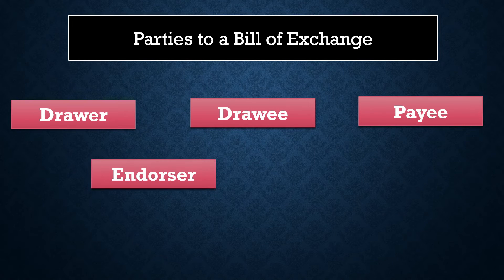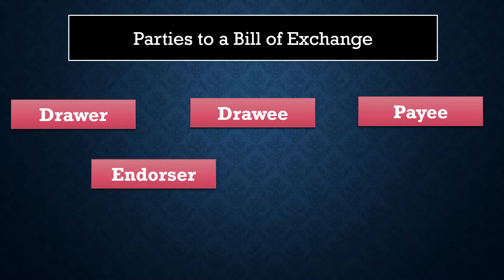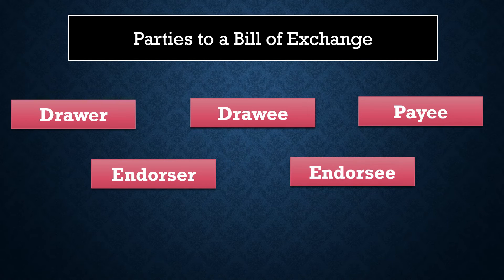The document will be handed over to the payee. The payee can endorse the document to another person — if he transfers the document to another person, the payee becomes the endorser, and the person to whom the document is transferred becomes the endorsee.